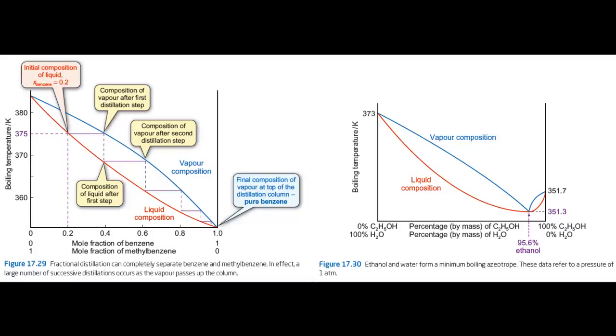First, let's be clear what this graph is showing. It isn't a vapour pressure composition diagram. It's a boiling temperature composition diagram, showing how the boiling temperature of the mixture varies according to the composition of the mixture.